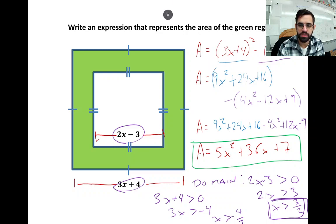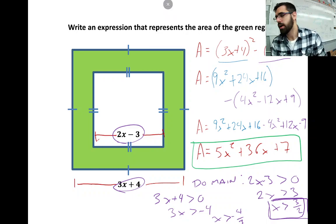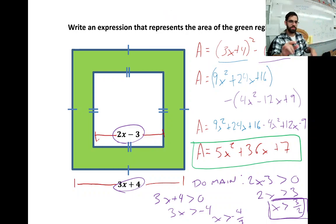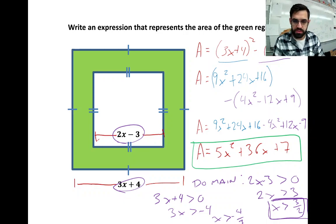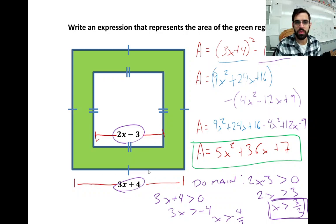Now we're going to talk about domain, because we have x used to represent the size of a couple of squares. For the big square, the side of a square can't be a negative number, because you can't take a ruler and measure something and get a negative measurement. It doesn't make sense. You could argue that a square with a side length of 0 is possible, but I'm going to say no.